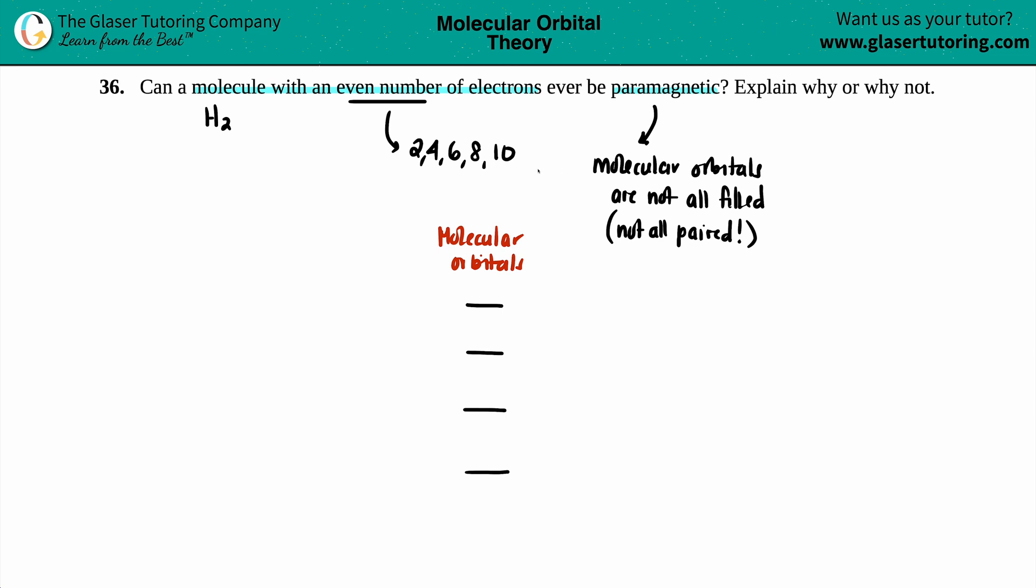But now, all we have to do is just talk about even number of electrons. Now, let's just say that you have a total of 4 molecular orbitals, and I'll just say that MO, right? MO.